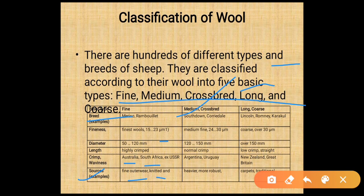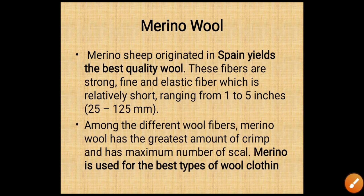Medium crossbreeds include Southdown and Corriedale with a fineness of about 24 to 30 micrometers and diameter of 120 to 150 mm with normal crimpness, found in Argentina and Uruguay. Long coarse breeds include Lincoln, Romney, and Karakul with a fineness of about 30 micrometers, diameter of about 150 mm, low crimpness, and straight fiber. Found in New Zealand and Great Britain, they are used for making carpets and traditional uses.